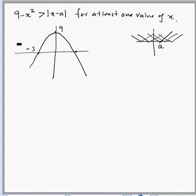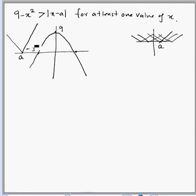If I draw this triangular graph in a certain position, you can see this position gives no solution, because for all values of x, |x - a| is above the parabola.